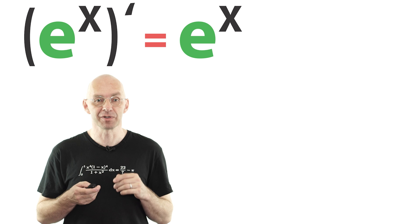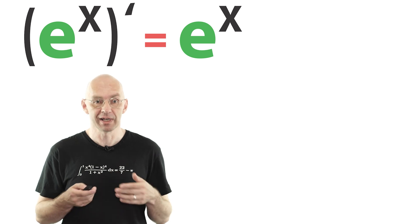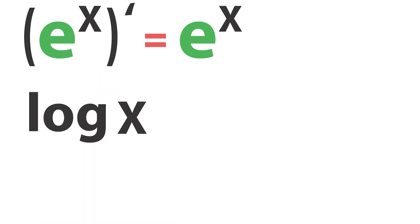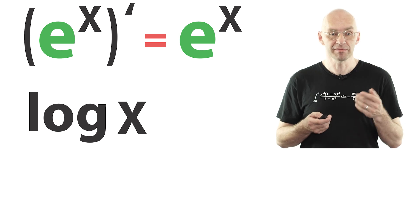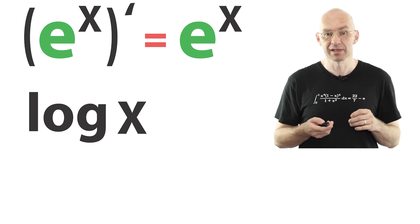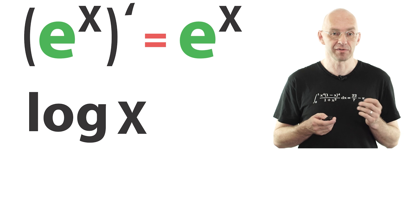So, if you made it up to here, there is no reason to stop. Let's use this insight for something fun. The natural logarithm, log x, is the inverse of the exponential function. This means that e to the log x is equal to x.